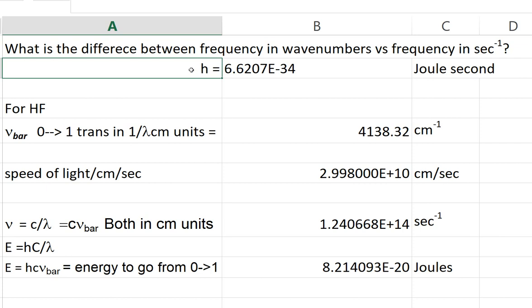Today we're going to look at the difference between the frequency in wavenumbers versus the frequency in Hertz or seconds to the minus one. We're going to need Planck's constant, which is given here in joules second.